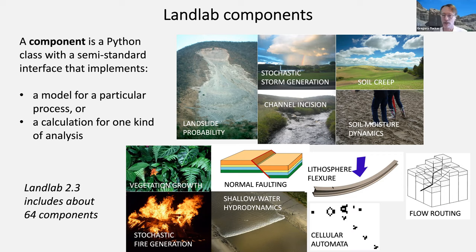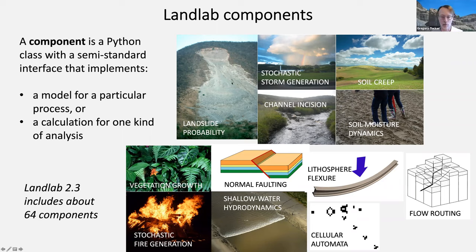The various pictures on this slide show examples of processes that Landlab components model: flexure of the lithosphere as an elastic sheet under surface loads, generating stochastic rainstorms, calculating soil creep, channel incision, probability of landsliding, and a whole range of other things. The current version of Landlab has around 64 components, and the collection is steadily growing thanks to contributions from the community.